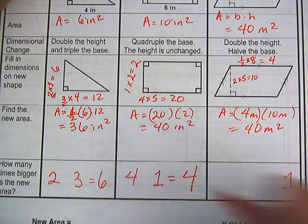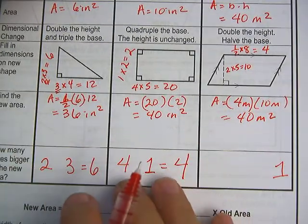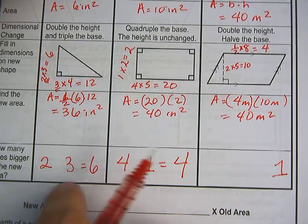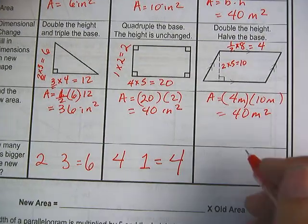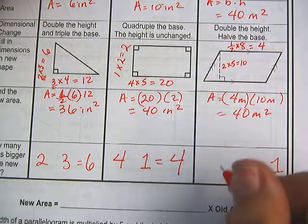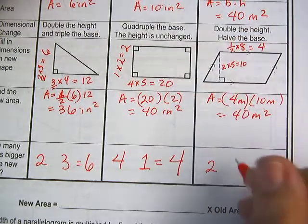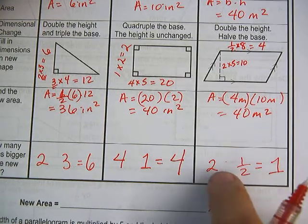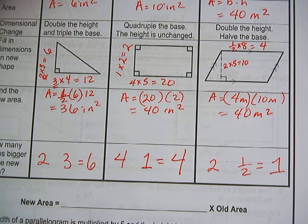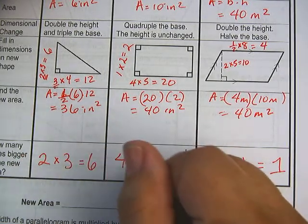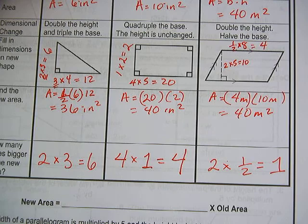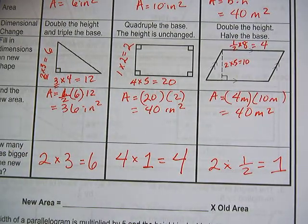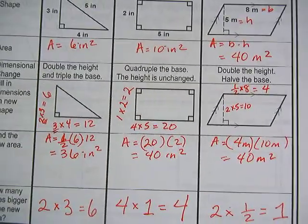Here, quadruple the base. That's a factor of 4. Height is unchanged. That's a factor of 1. I need to do something with these two factors to get a 4 from 4 and 1. I need to do something with these two factors to get a 6 from 2 and 3. Then finally, I have, this is the 2 and that factor's a half. How can I put 2 and a half together to get 1? Hopefully you notice that if I multiplied each of these factors together, that gave me the impact on area.